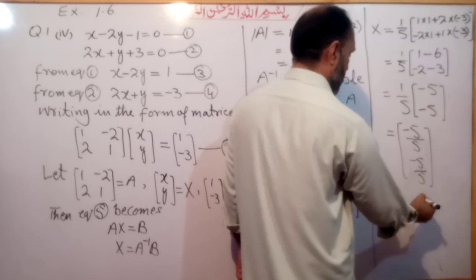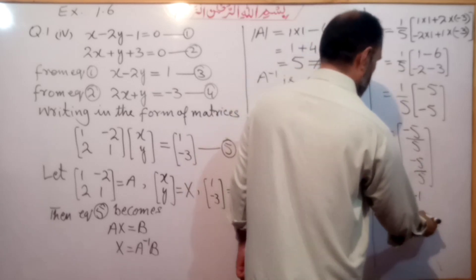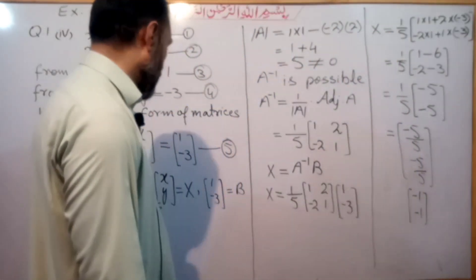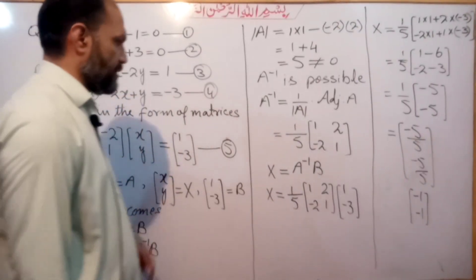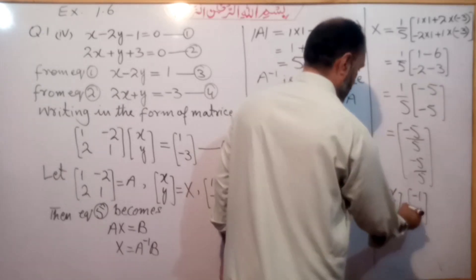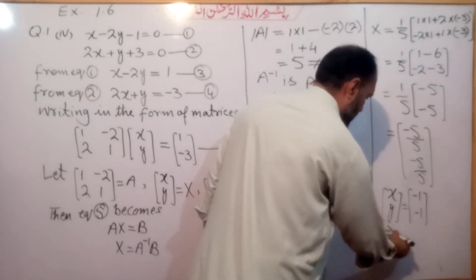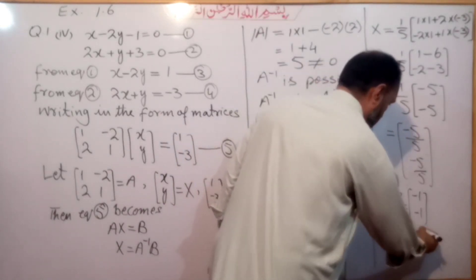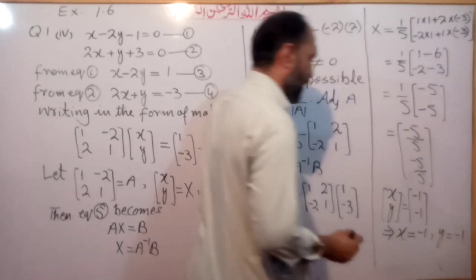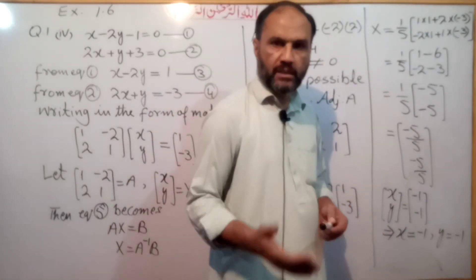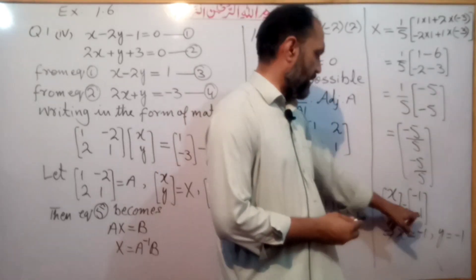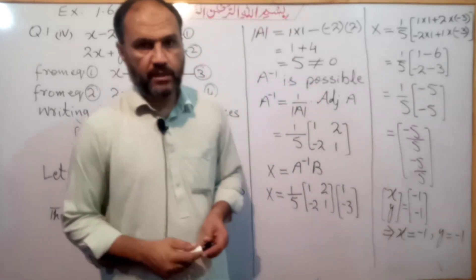Therefore x = minus 1 and y = minus 1. The matrix X = [x, y] = [minus 1, minus 1], which means the corresponding elements give us x = minus 1 and y = minus 1. That is the answer for question number 4.